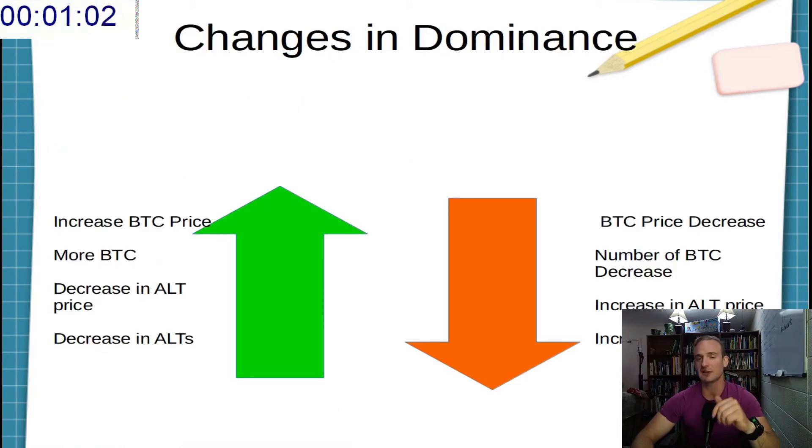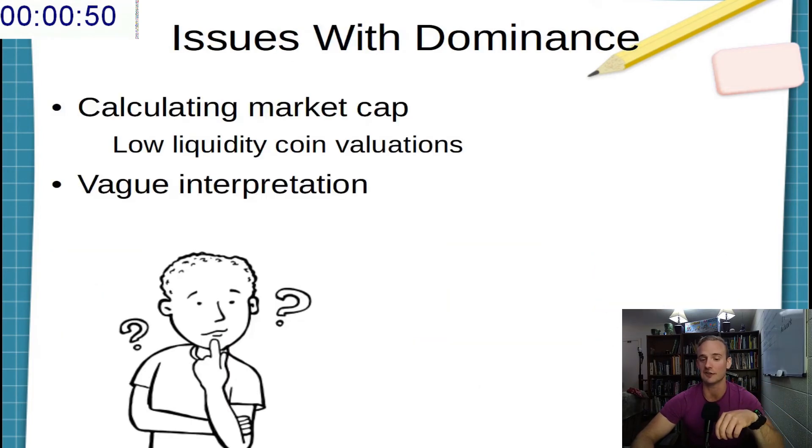Changes in Bitcoin dominance, things that will increase dominance are an increase in the price of Bitcoin, more Bitcoin being issued, decrease in the price of altcoins, or a decrease in the number of altcoins. Things that would decrease Bitcoin's dominance are obviously the inverse of all of these things.